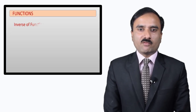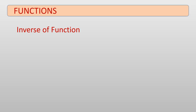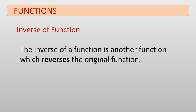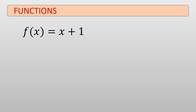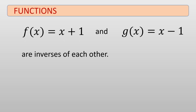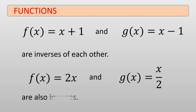Finally, we talk about the inverse of a function. An inverse function is a function that reverses another function. Consider f of x equals x plus 1 and g of x equals x minus 1. The function f adds 1 to an x value whereas g subtracts 1 from it — these two functions are doing opposite mathematical operations, so f of x and g of x are inverses of each other. Similarly, f of x equals 2x and g of x equals x over 2 are inverse functions.